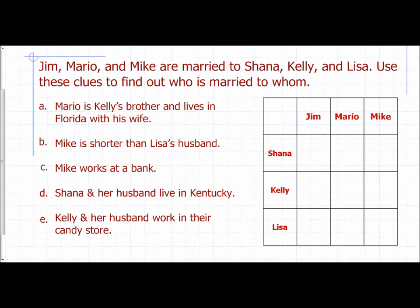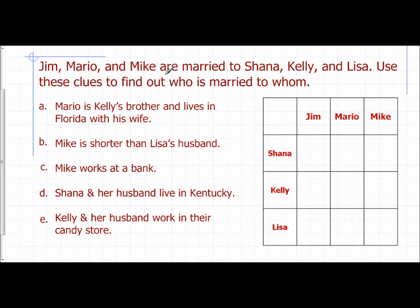The first clue says Mario is Kelly's brother and lives in Florida with his wife. Since Mario is Kelly's brother, they cannot be married, so I'm going to fill that in — Mario and Kelly cannot be married.